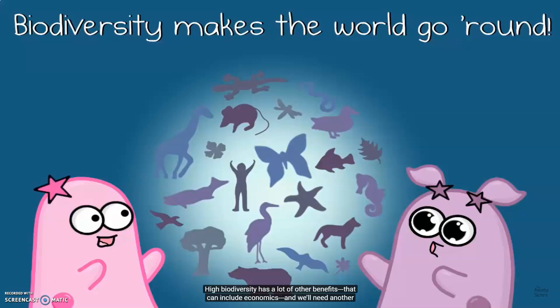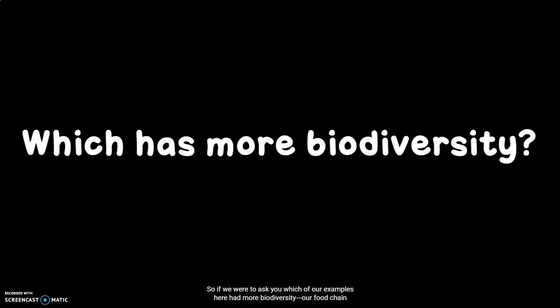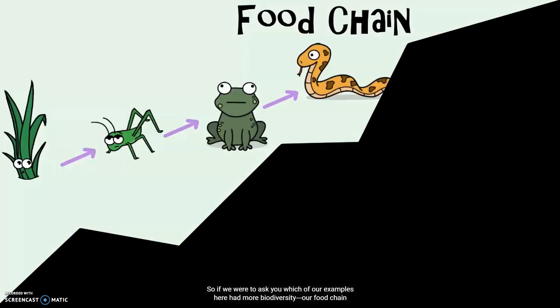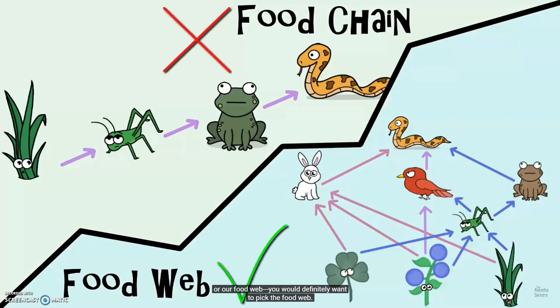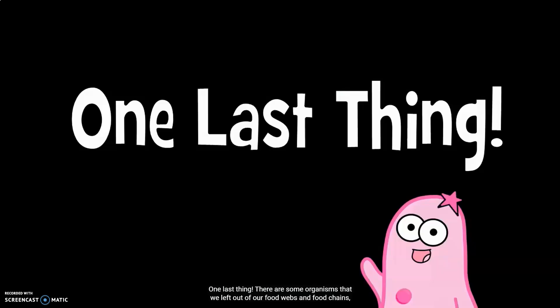High biodiversity has many other benefits that can include economics, and we'll need another video to really touch on all of them. If we were to ask which of our examples had more biodiversity — our food chain or our food web — you would definitely want to pick the food web.